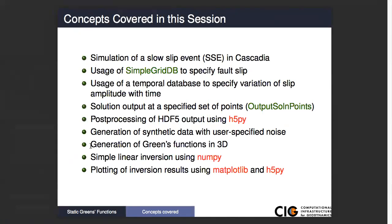We're also going to look at post-processing the output using H5Pi. We're going to generate some synthetic data from our forward model with some noise added. Then we're going to generate Green's functions for this problem. And finally, we're going to do a very simple linear inversion using NumPy, and then plot the inversion results using matplotlib and H5Pi.